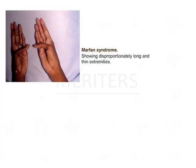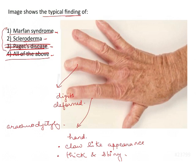On the other hand, Marfan syndrome presents with digits that are long, the thumb is extremely long and can be extended, and there is hyper-flexibility of the joints. The fingers are disproportionately long and the extremities are very thin. These features are typical of Marfan syndrome, while the given question is typical of scleroderma.